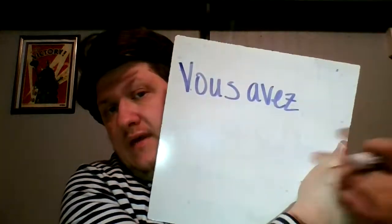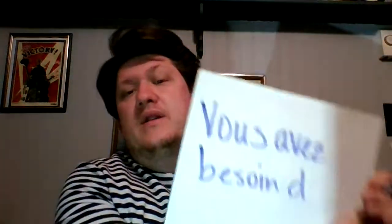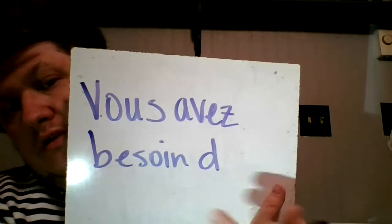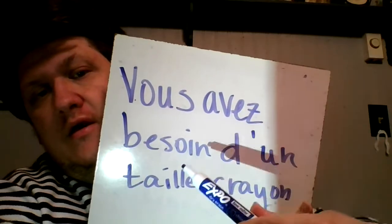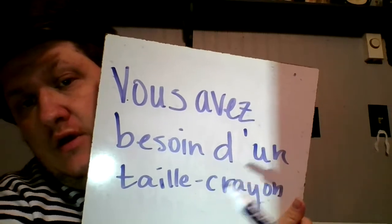Let's do one more. Let's say you have the subject 'vous'. Vous is your subject there, so you want to say 'you, formal, need'. So: vous avez — A-V-E-Z — besoin de, but I'm going to need to do an apostrophe afterward. So you would say: Vous avez besoin d'un taille-crayon. It's very important that you have all three parts: your conjugated verb avoir, then besoin, and then de or d'apostrophe according to the case.